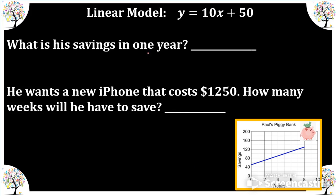What is his savings in one year? So it's asking for savings. That's y. So we need to plug in weeks for x. But it's asking for a year. So there are fifty two weeks equals one year. So we're going to plug in fifty two for x. And we get five hundred twenty plus the initial amount. And we have a total of five hundred and seventy dollars.